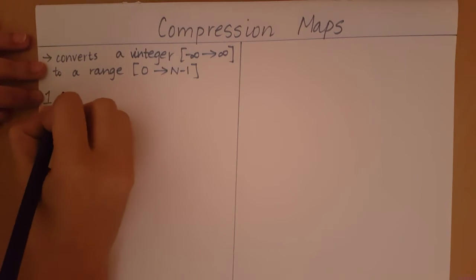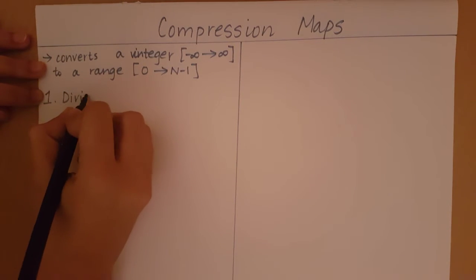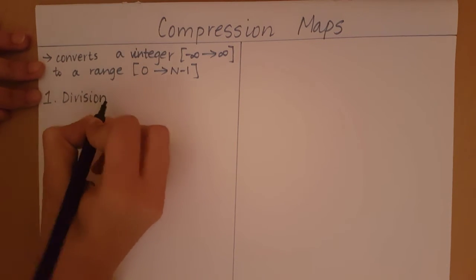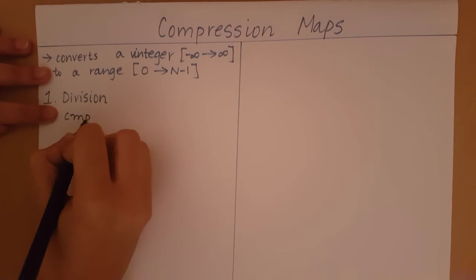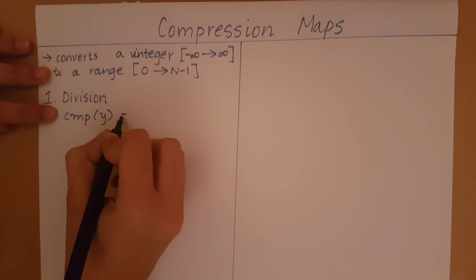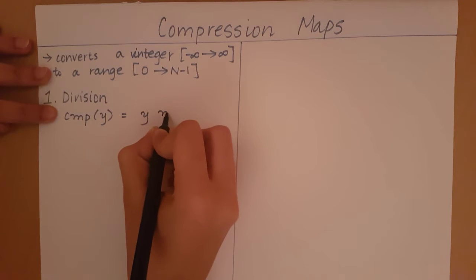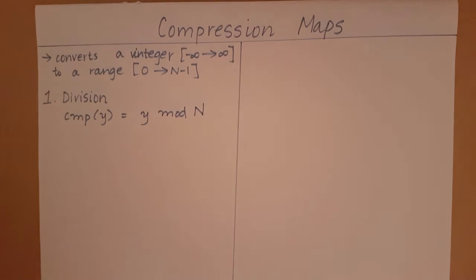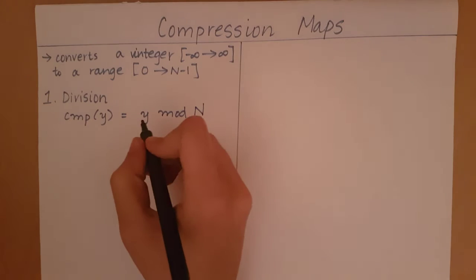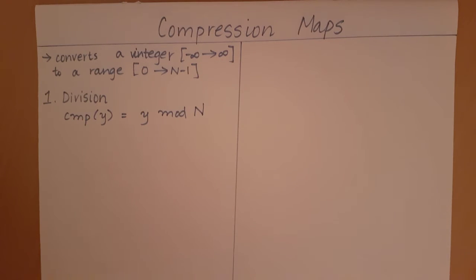The first being division. So if I have an integer y, then the compression map of that y is going to equal y mod n. So it's going to divide y by n and whatever integer it gets is going to be the integer in the range 0 to n-1.